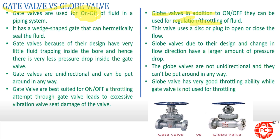In a gate valve, there is a wedge-shaped gate. The handwheel is connected with this wedge-shaped gate and it moves either upward or downward. While in a globe valve, it uses a disk or plug which sits on a cavity inside the valve — used for either on-off or throttling of the fluid.